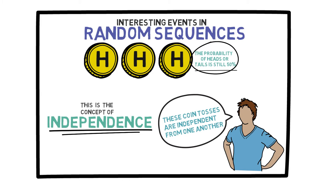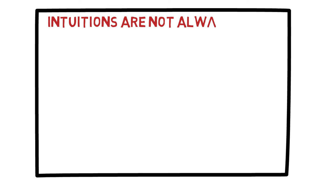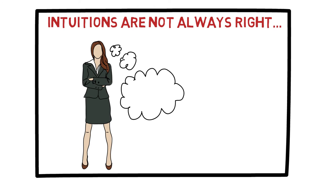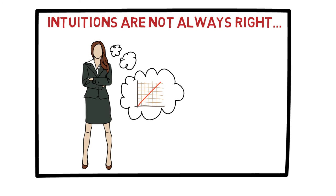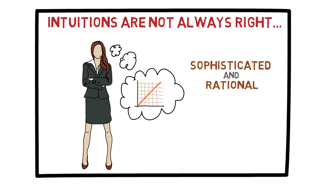Our intuition is sometimes wrong in these kinds of scenarios. For example, people make the same mistake when they are investing. Some people say, the stock price of a company has gone down three times in the past three days, so it has to go up. Unfortunately, this way of thinking is fairly naive. Realistically, if you are going to be looking at investing, your thinking should be a little more sophisticated and rational than that. In these situations, this kind of intuitive approach is not usually useful.